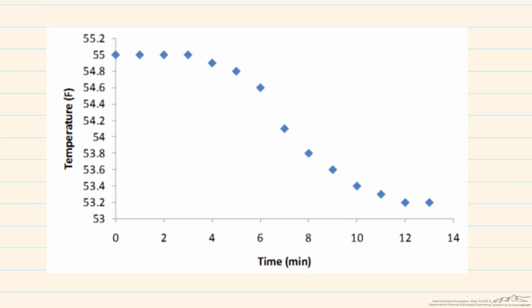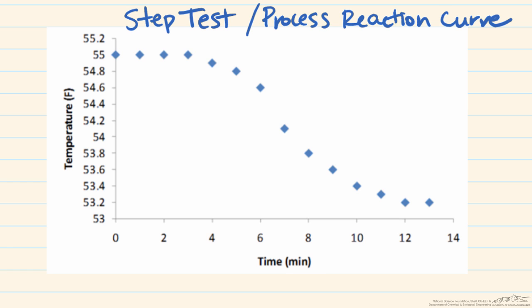So because of the fact that we have made a step change in the controller output this method is often known as the step test method. Another name for this is the process reaction curve method. The reason why it's called the process reaction curve method is because the figure that we show shows how the process reacts with a change in the controller, hence this is the process reaction curve.